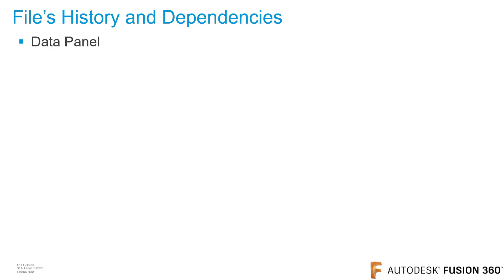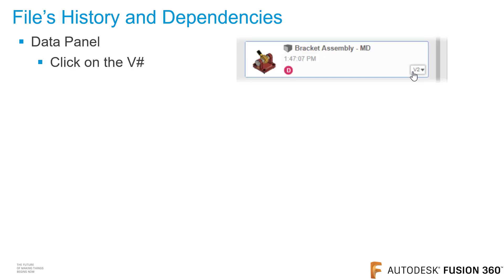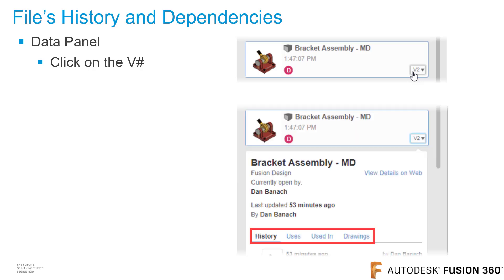To view a file's history and dependencies, open the data panel and click on the V number for the file that you want to examine. More data will be displayed. Click on History to see the file's versions. A version is created each time a file is saved. The Uses option displays files that are referenced into this file. Used In shows assemblies that reference this file. And Drawings displays drawings that are based on this file.